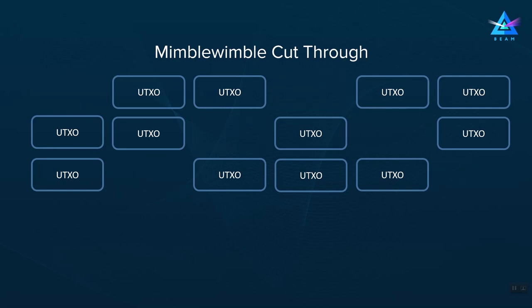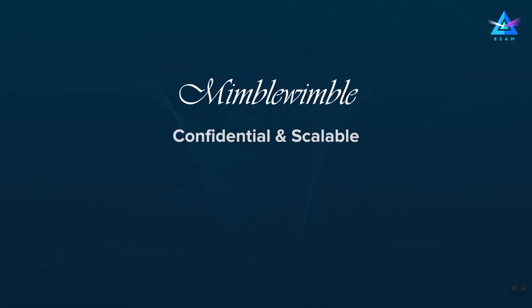This process is called cut-through, and as a result the amount of information that needs to be stored and downloaded is a function of currently unspent coins, which is usually an order of magnitude smaller than the entire transaction history. So as we have seen, the MimbleWimble protocol is both confidential and scalable in terms of blockchain size, and during the last year we have found out that it can do a lot more.